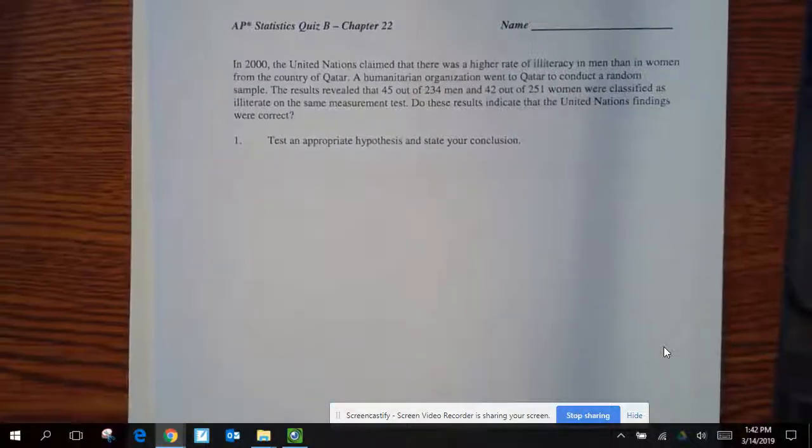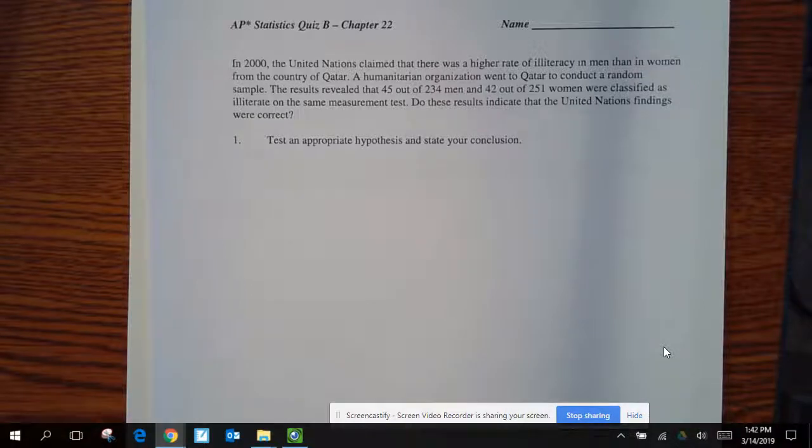For our first one, I have a textbook example here, literally from the textbook. In 2000, the United Nations claimed there was a higher rate of literacy in men than in women from the country of Qatar. The humanitarian organization went to Qatar to conduct a random sample. Results revealed that 45 out of 234 men and 42 out of 251 women were classified as illiterate on the same measurement test. Do these results indicate the United Nations findings were correct? State, test an appropriate hypothesis, and state your conclusion.